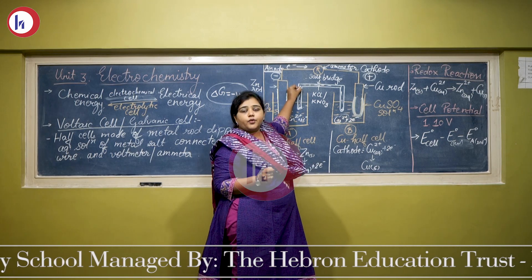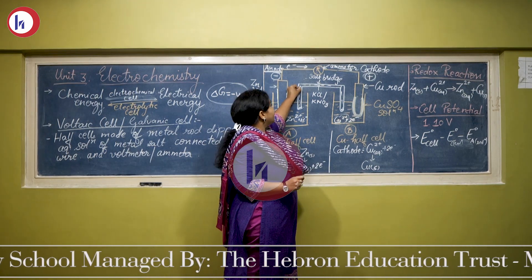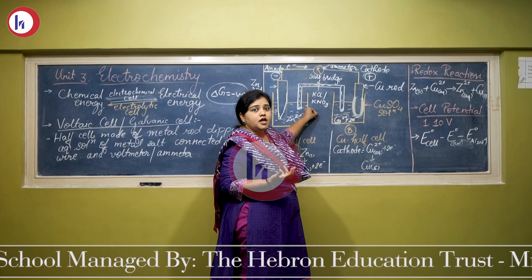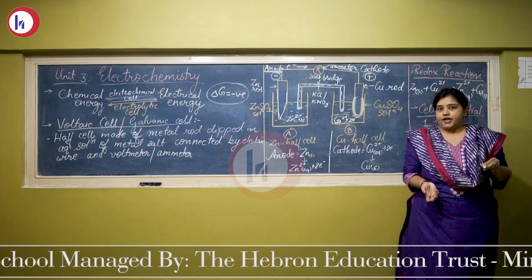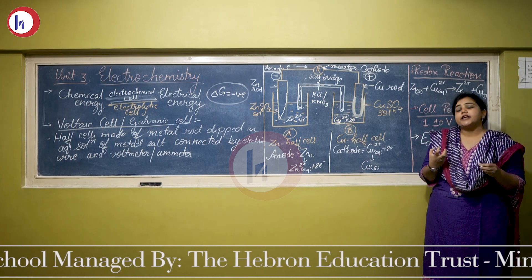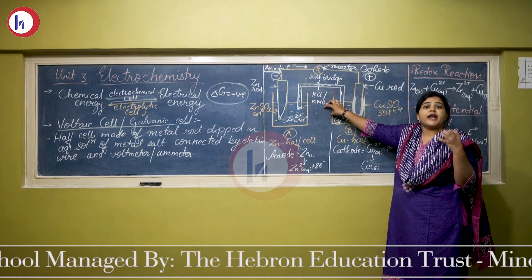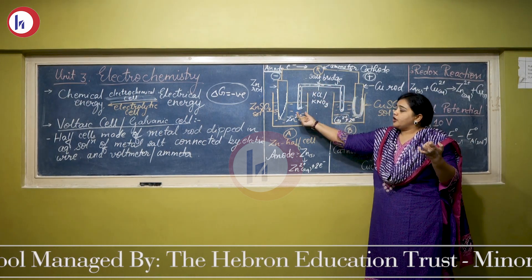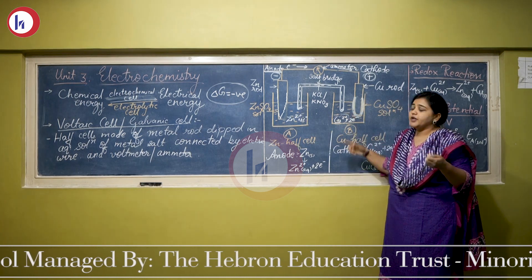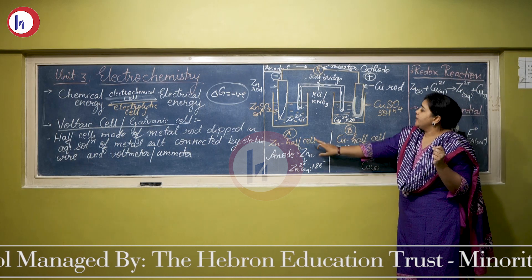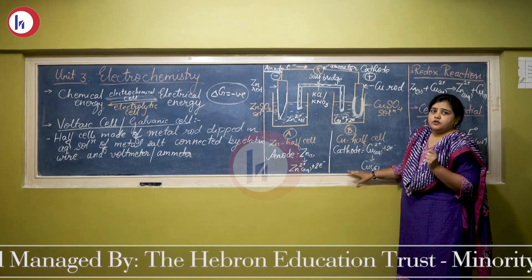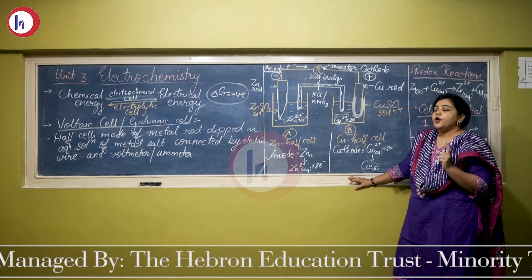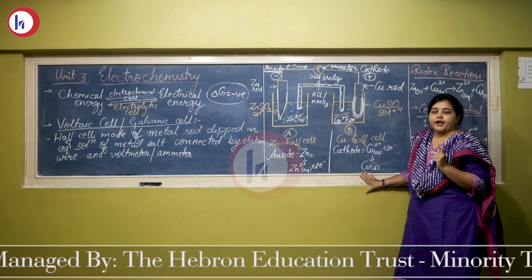The salt bridge is a U-shaped glass tube that is filled with inert electrolytes like KCl, KNO₃, or NH₄Cl, that are solidified in agar-agar gel — a semi-solid gel-like substance. Both ends of the salt bridge are dipped in each of the half cells. The function of the salt bridge is to complete the entire circuit of the electrochemical cell.